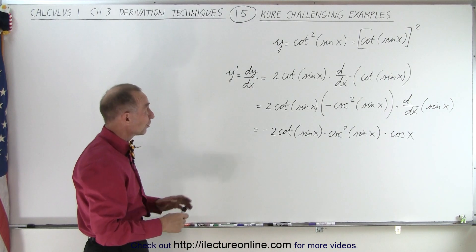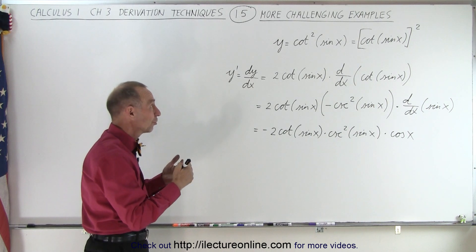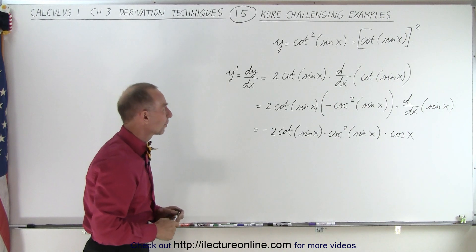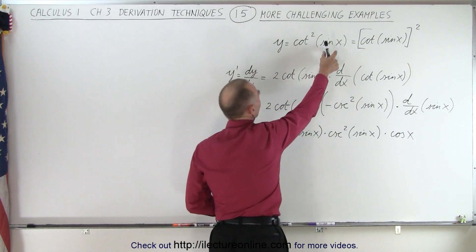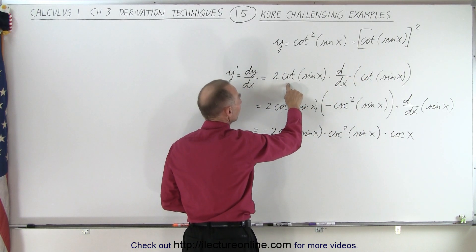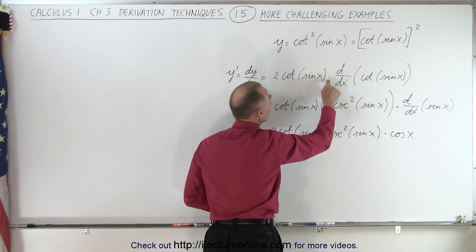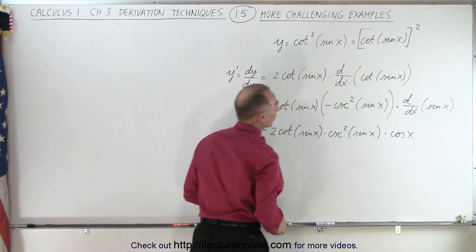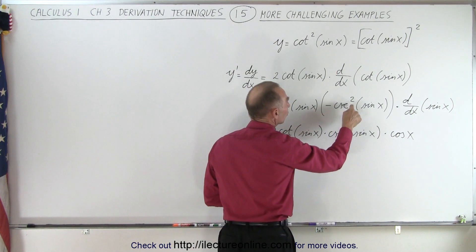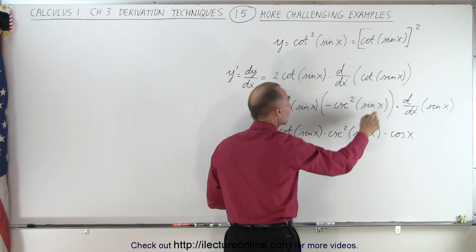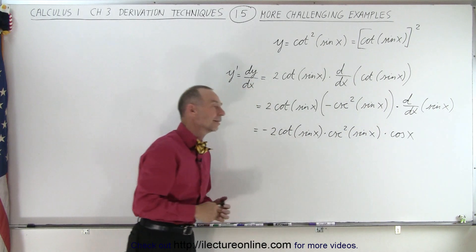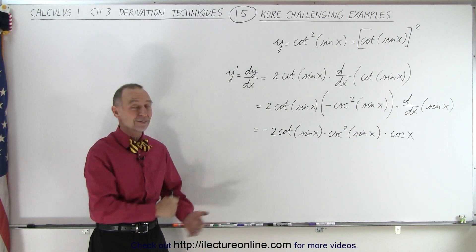It's not likely you'll encounter something like this, but it's good to go through these types of problems so that we can learn the rules and be solid in them. This is not a product — sine of x is the argument of the cotangent. We take two times the cotangent of sine of x to the first power times the derivative of the inside. The derivative of cotangent is minus cosecant squared of sine of x, times the derivative of the angle, which is cosine of x. And that is how it's done.